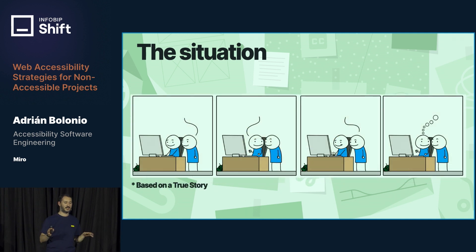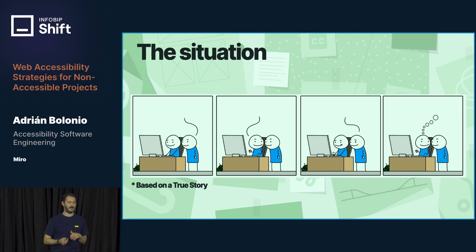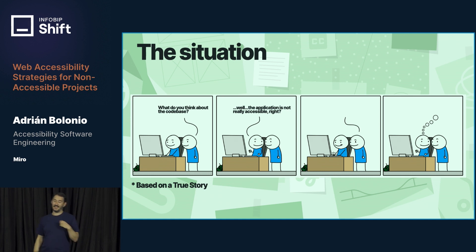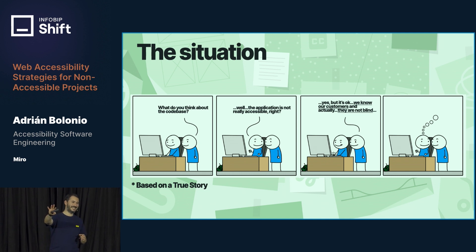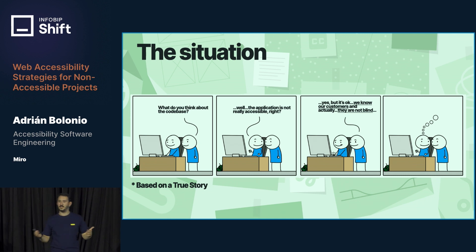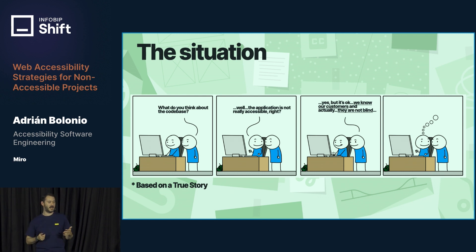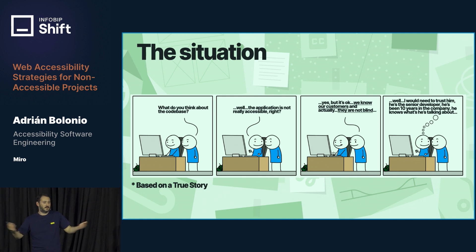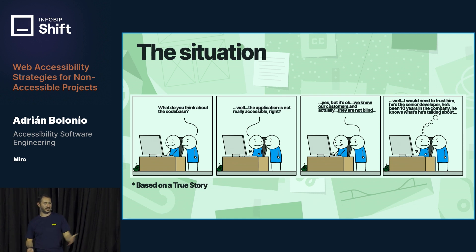I'm going to picture another situation that is really based on a true story. Again, you have time to look at the codebase. "What do you think about the codebase?" The same — "Well, the application is not very accessible, right?" And they say something like, "Yeah, it's okay. We know our customers. They are not blind." But you don't have enough knowledge yet to assess if that's correct or not. Maybe you say, "Well, I need to trust him because he's the senior developer, he's been here for 10 years." And yes, I'm using "he" because, unfortunately, that's the case.